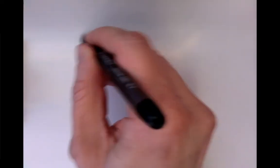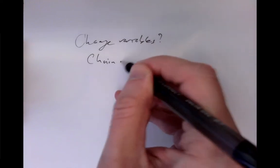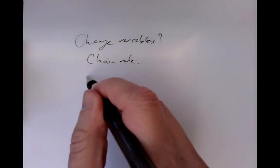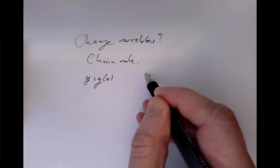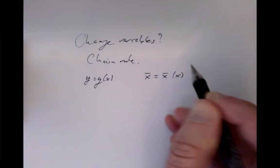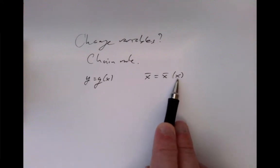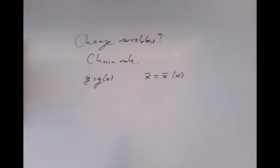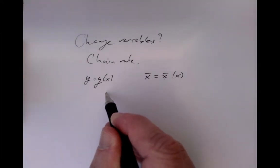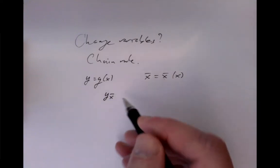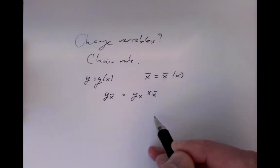When we change variables in differential equations, we are always thinking about the chain rule. That's the main technique we use in coordinate expressions. For example, if we have a function y = y(x), and we introduce a new variable — to avoid using the letter x, I'll call it x-bar — and suppose we have a diffeomorphism between the old and new variables. The chain rule says that the derivative of y with respect to x-bar is simply the derivative of y with respect to x times the derivative of x with respect to x-bar.